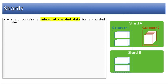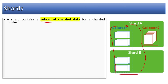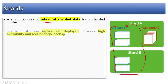Shards are a subset of sharded data. As shown here, one collection can be spread over two shards. Shards must have a replica set deployed — note that this is a must, not just a recommendation. This ensures high availability.